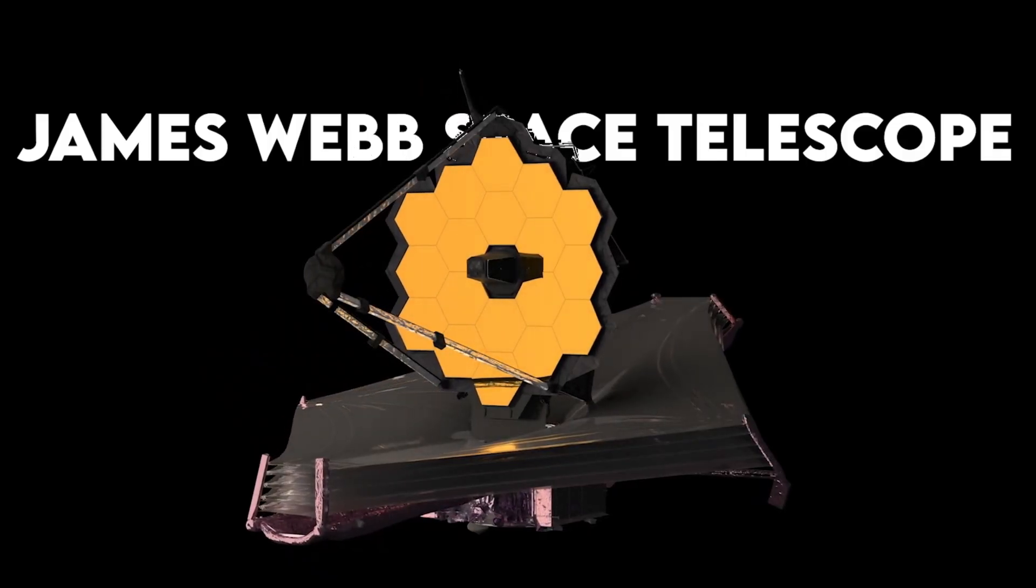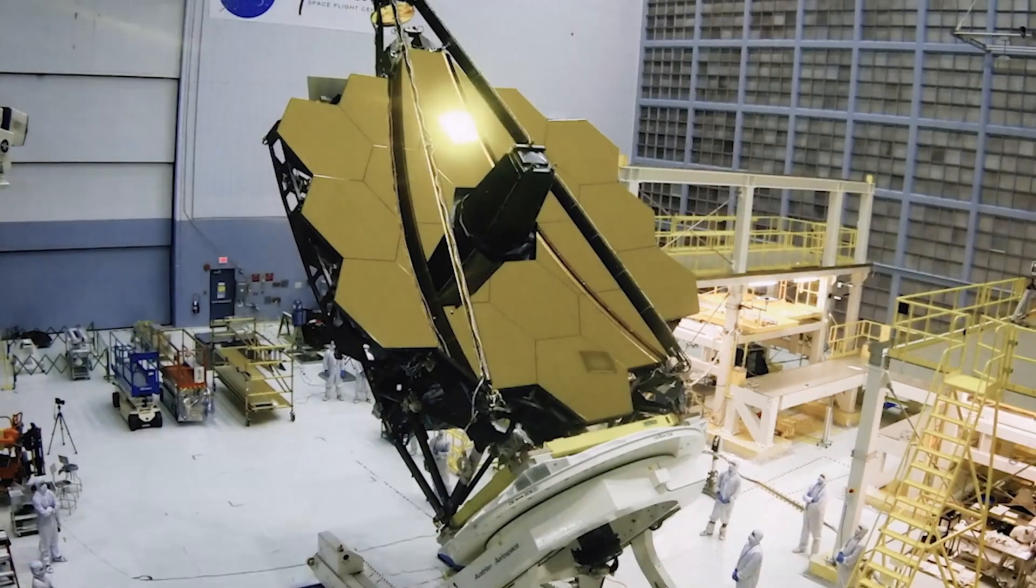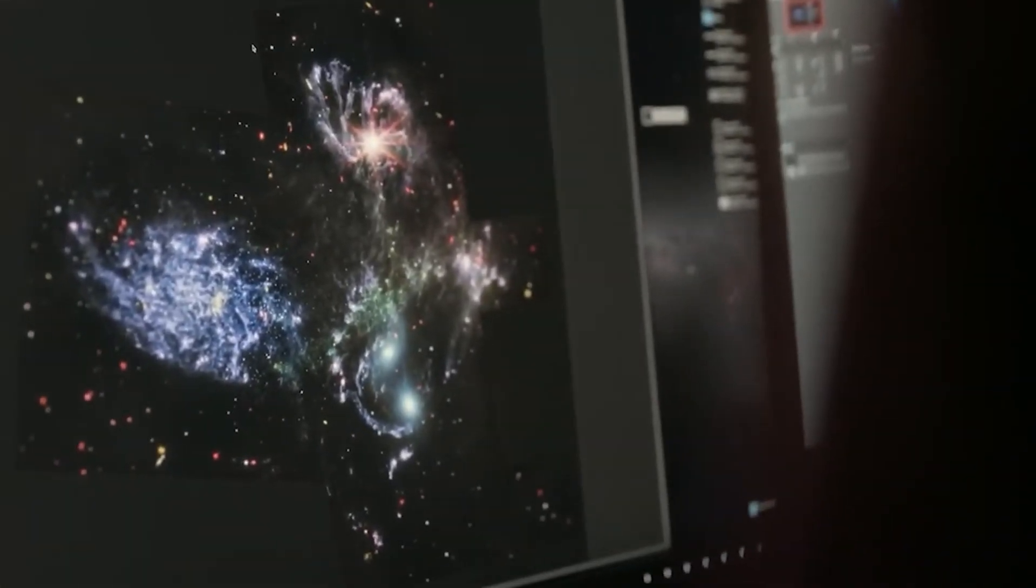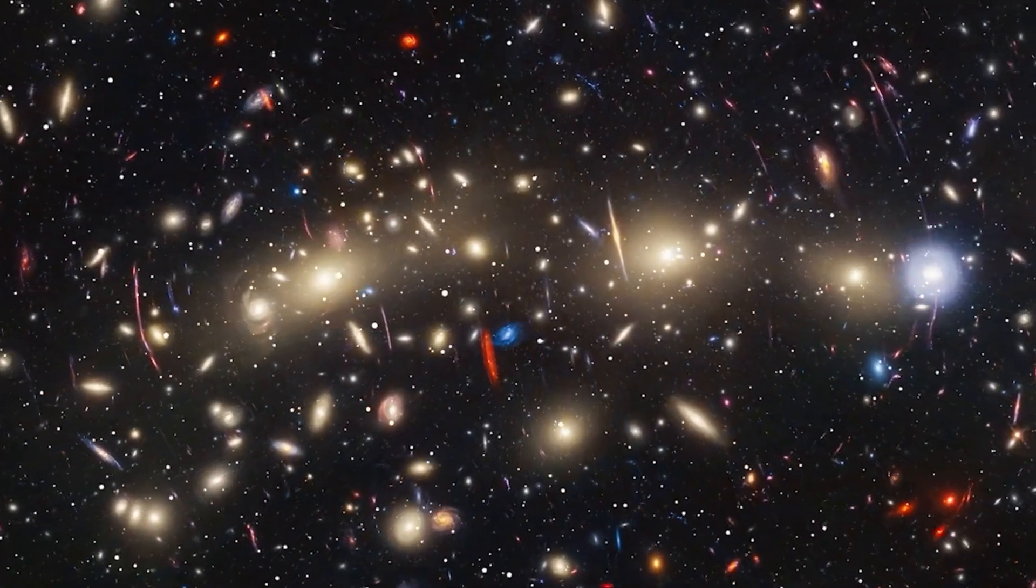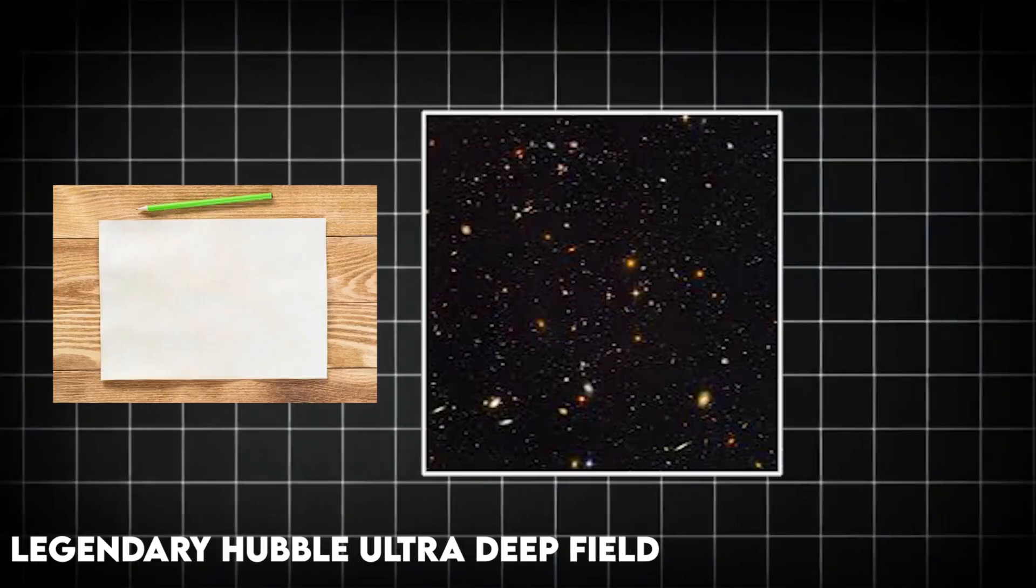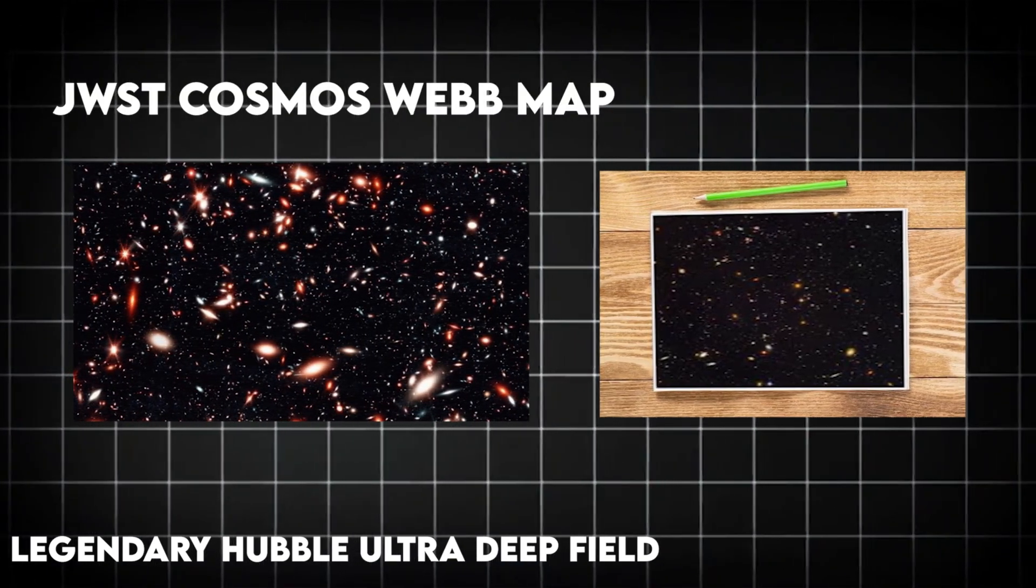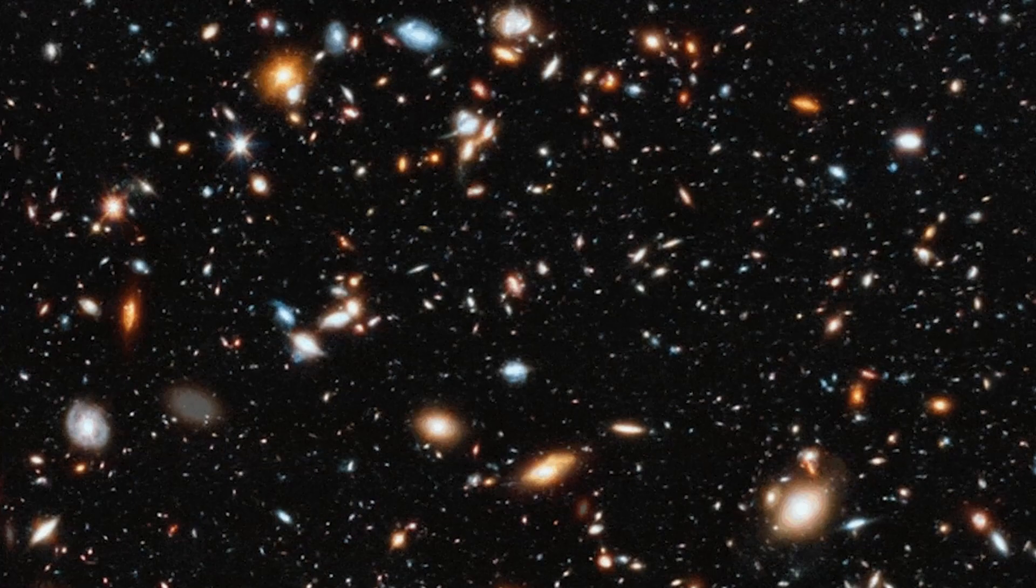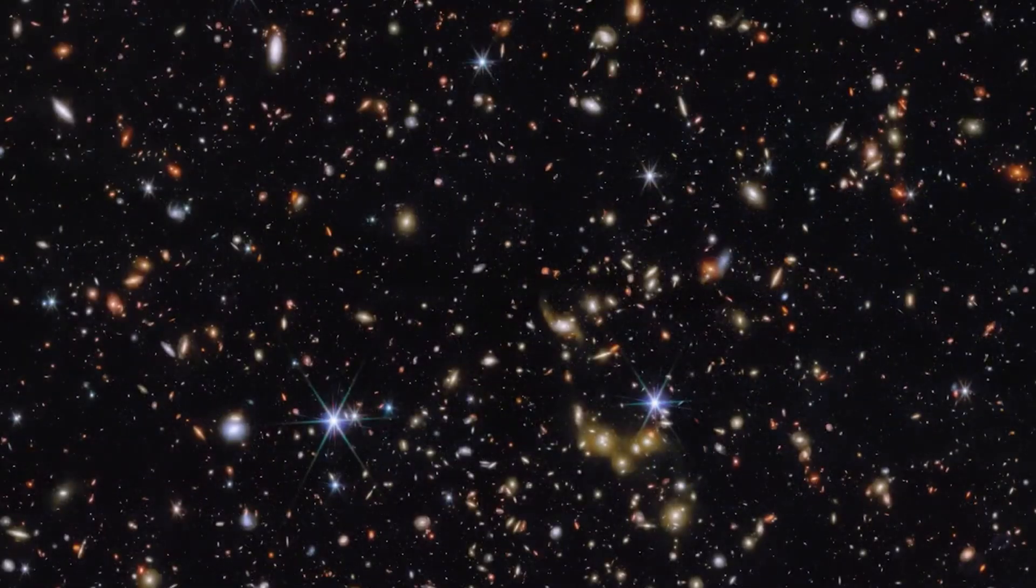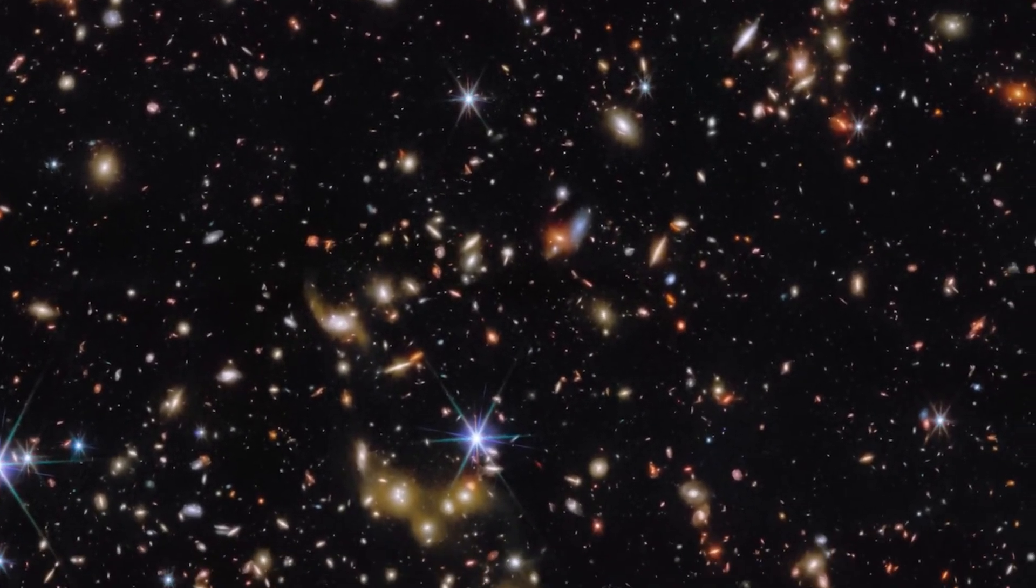The James Webb Space Telescope, sporting its massive golden mirror like a space-age disco ball with a PhD, was built specifically to detect this faint infrared glow. It peers through dust that left Hubble squinting and captures the ancient, reddened light of the universe's earliest structures. Let me put this into perspective for you. If the legendary Hubble Ultra Deep Field were printed on a regular sheet of paper, the new JWST Cosmos Web map at the same resolution wouldn't be a page. It would be a wall-sized mural, stretching over 13 feet on each side. That's not an upgrade. That's going from postcard to planetarium.